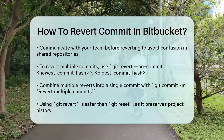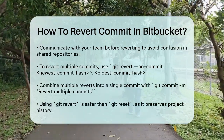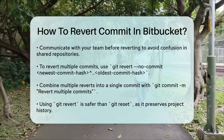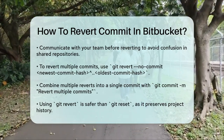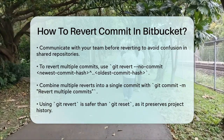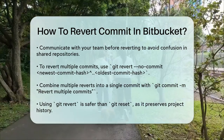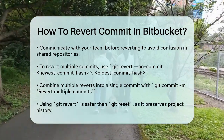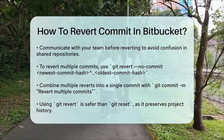Remember, using git revert is generally safer than using git reset because it doesn't alter the project's history. Git reset can roll back the state of the branch to an earlier state, dropping all commits made after that point, which can cause issues for other team members.